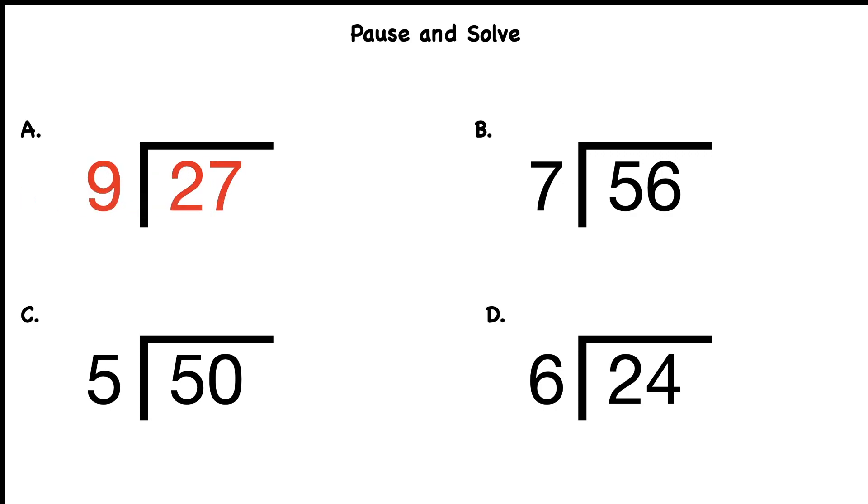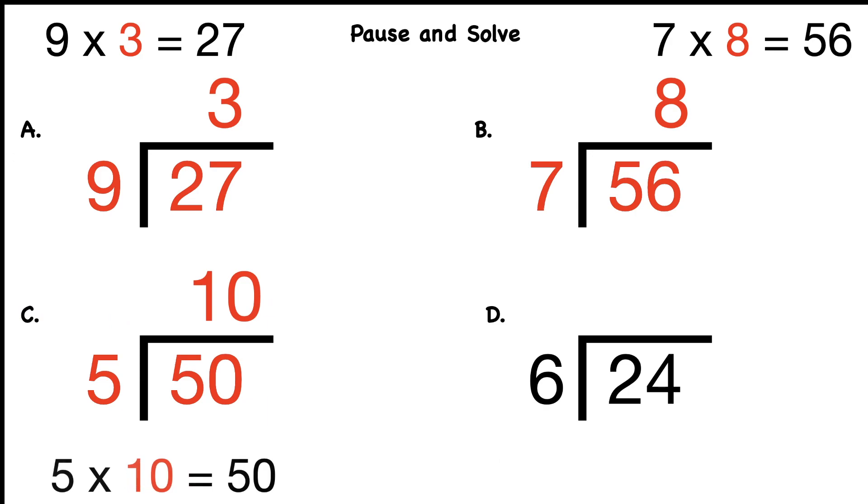How'd you do? Problem A: 27 ÷ 9. Did you get 3? Great, because 9 × 3 = 27. Problem B: 56 ÷ 7. Did you get 8? Perfect, because 7 × 8 = 56. Problem C: 50 ÷ 5. Did you get 10? Great, because 5 × 10 = 50, and we're using our related facts. Finally, 24 ÷ 6. Did you get 4? Great, because 6 × 4 = 24. Thank you so much. If you made it this far, great job. Keep practicing your multiplication facts because it will really help you with division. See you on the next one.